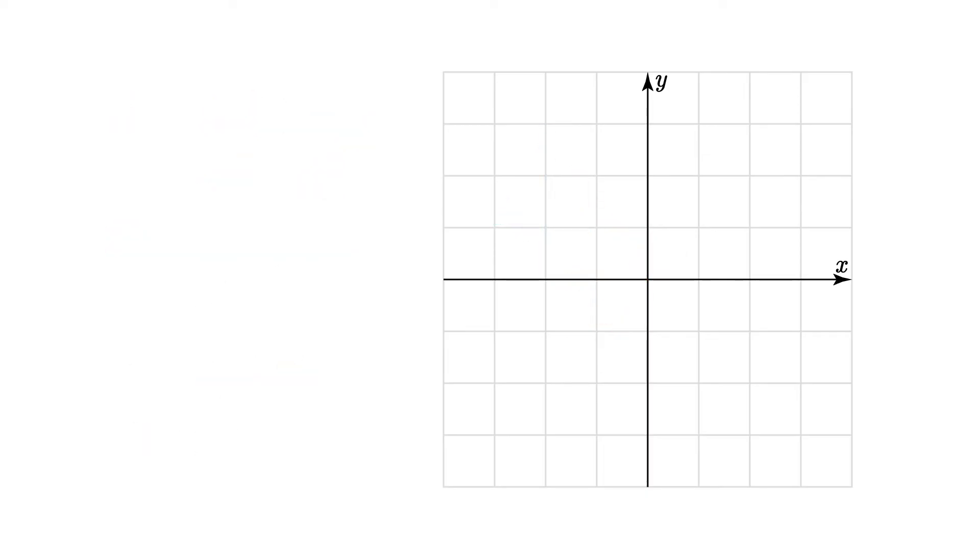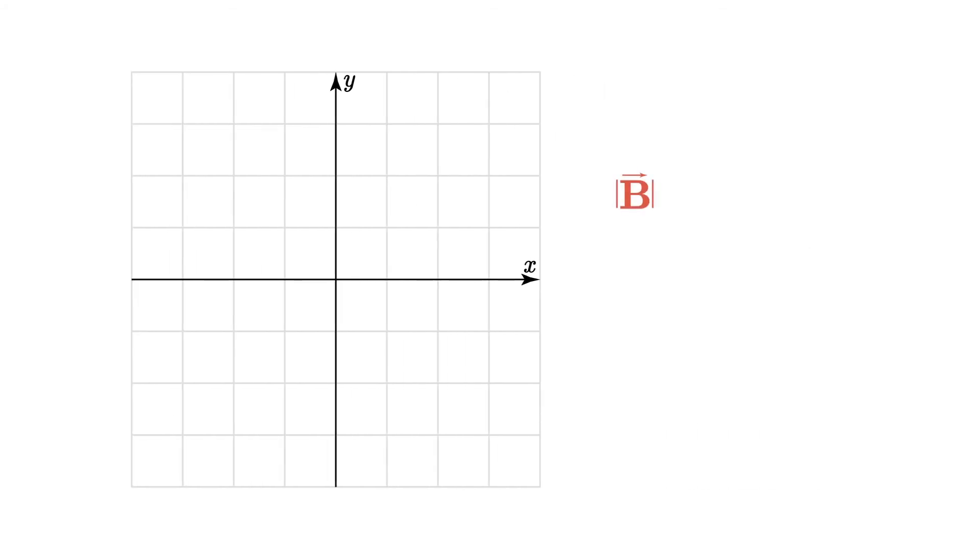Now let's practice going back the other way. If we're given a vector whose magnitude is 2 and whose angle from the x axis is 30 degrees, like this one here,